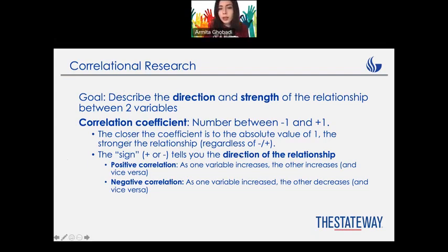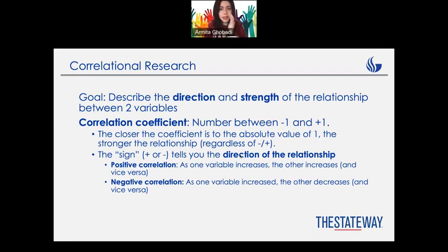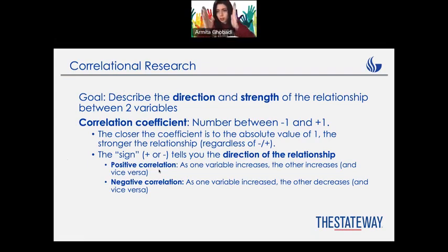The sign — positive or negative — shows the direction. For example, if you have minus 0.95 and positive 0.25, it doesn't mean minus 0.95 is less than positive 0.25; it is actually stronger. The direction is just negative. A positive correlation means one variable increasing causes the other to also increase — they move in the same direction. For example, positive 0.25 means variable one going up, variable two also goes up.